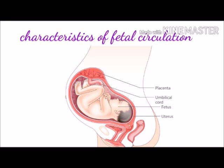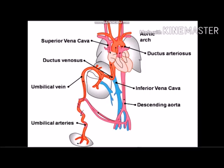Next we will see the special structures of fetal circulation. The first is the umbilical vein, shown here in red, which is one special structure. The second is the umbilical arteries — there are mainly two umbilical arteries in fetal circulation. The third structure is the ductus venosus. Between the right atrium and left atrium there is an opening or shunt known as the foramen ovale. The next special structure is the ductus arteriosus.